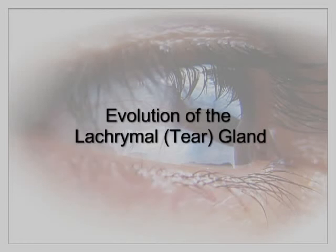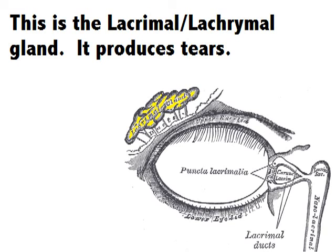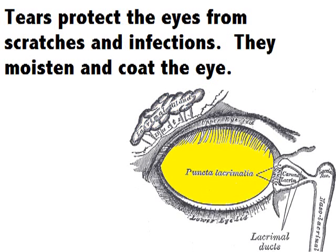Evolution of the lacrimal gland. This is the lacrimal gland — either spelling is correct. It produces tears. Tears protect the eyes from scratches and infections. They moisten and coat the eye. There are three types of tears: basal, reflex, and emotional.